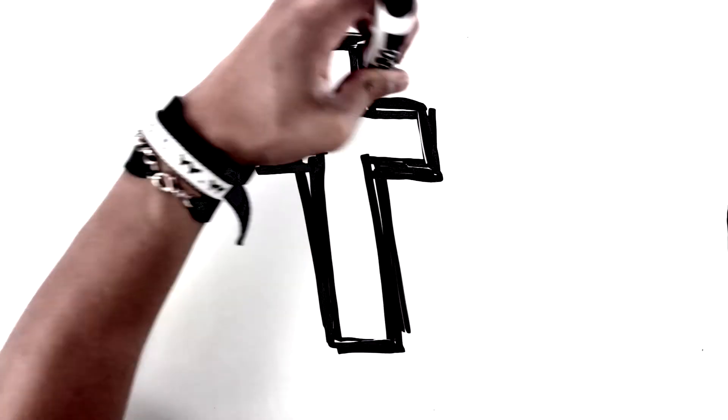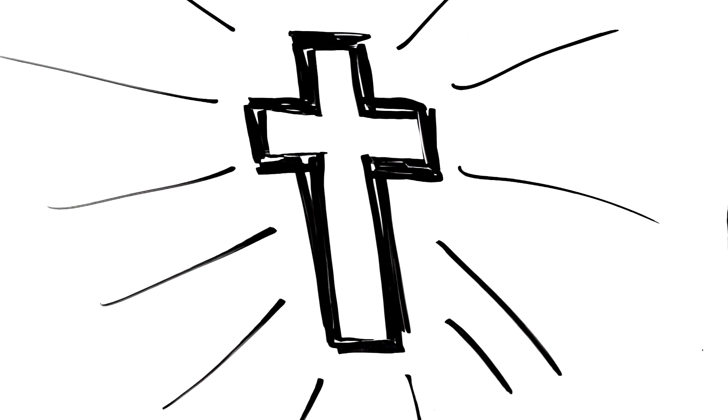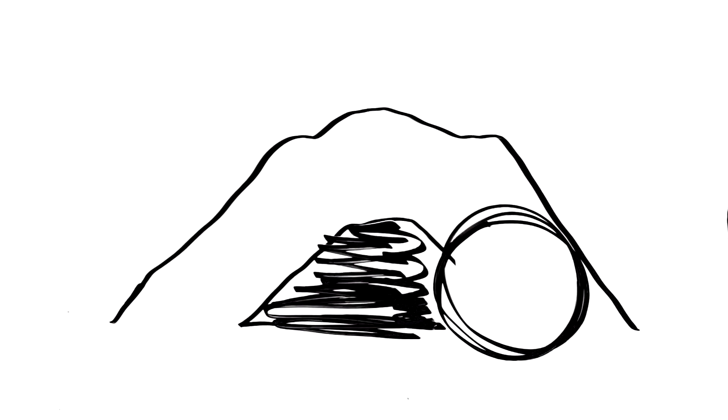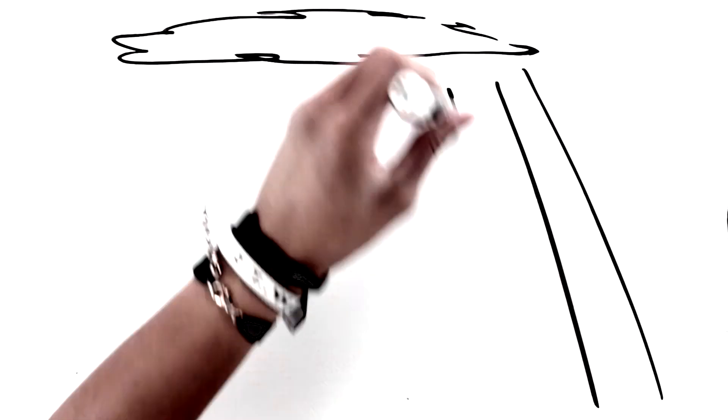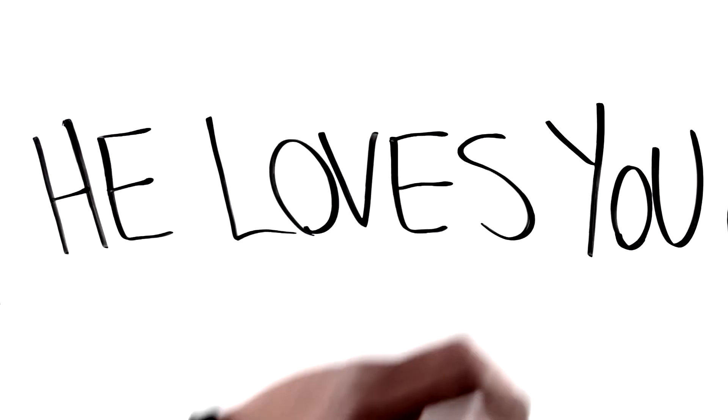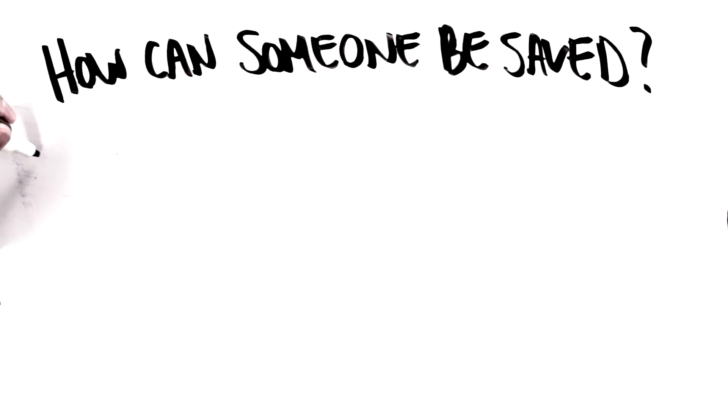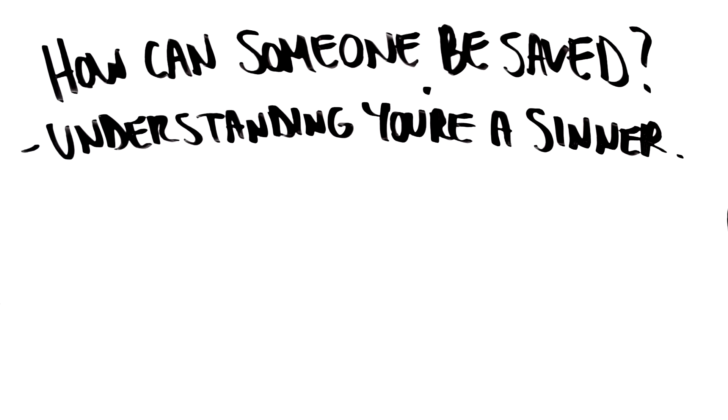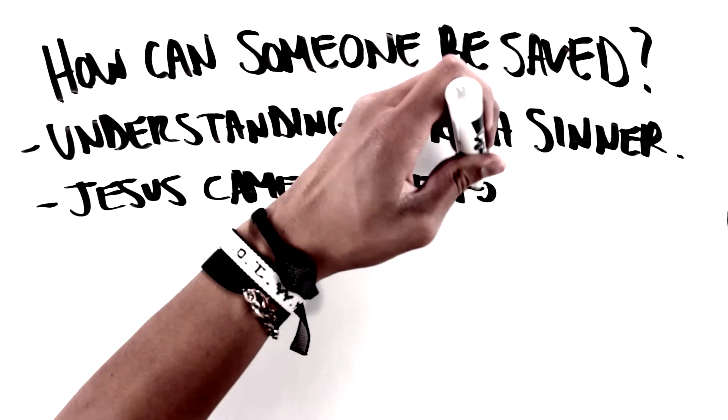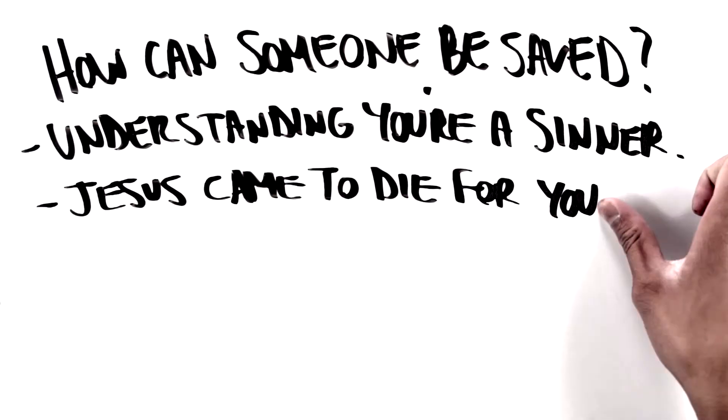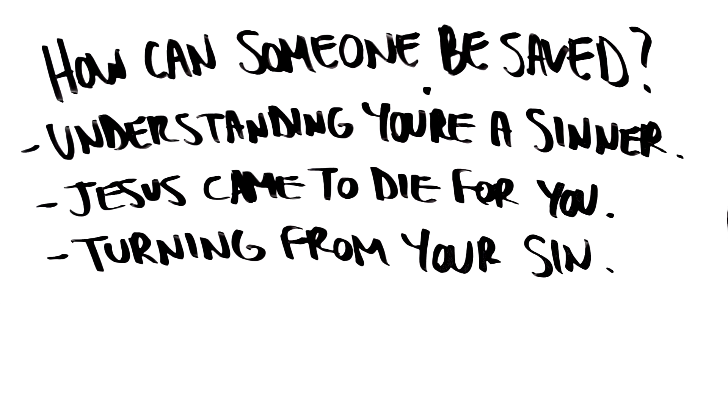Why did Jesus come in the form of a man? Why did Jesus die on the cross? Why did he rise from the dead? To show that he loves you. Why did he ascend to heaven? To prepare a place for those who receive him. What's God telling you right now? That he loves you. How can someone be saved? You're saved by understanding that you're a sinner. That Jesus being God came to die for your sin and by turning from your sin. This is called repentance.